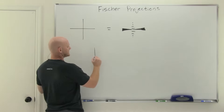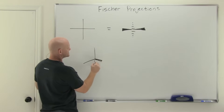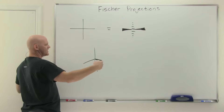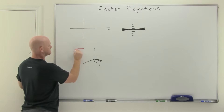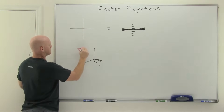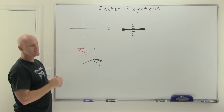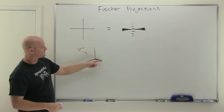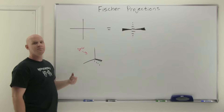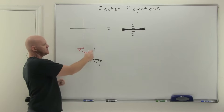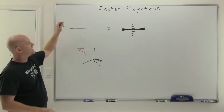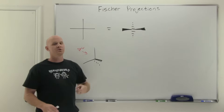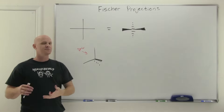Instead of looking at a tetrahedral atom as having two bonds in the plane, one wedge and one dash, Fischer projections look at it from a different perspective. If we put our eyeball up above and look down, both of the horizontal carbons would be coming towards you as wedges, and both of the vertical carbons would be going away from you as dashes. So instead of two bonds in the plane with one wedge and one dash, what you see with a Fischer projection is two wedges coming towards you and two dashes going away from you.